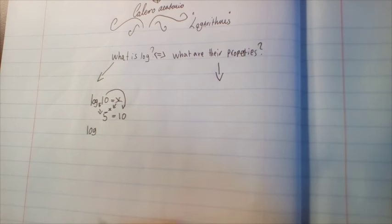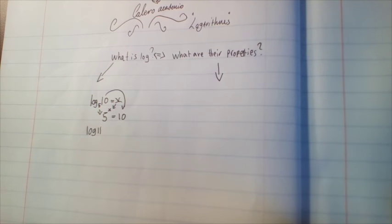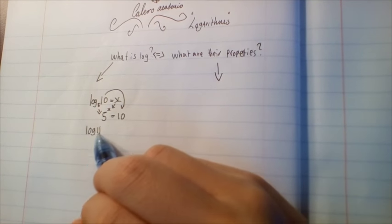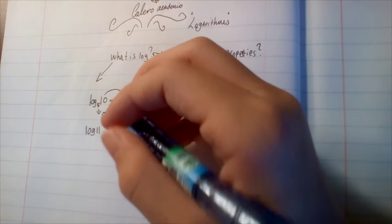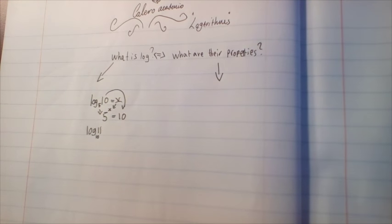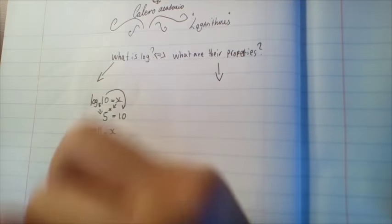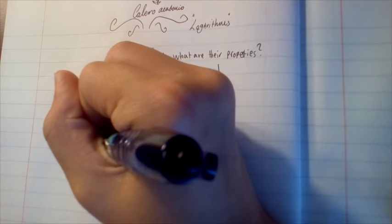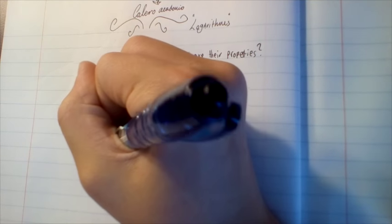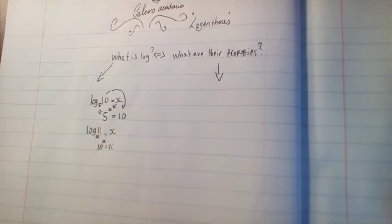When something says log 11 and they don't have a base written, that implies it's a logarithm of 11 with natural base 10. That's what it means. So it equals x, and 10 to the power of x is equal to 11 — and then we find that out.